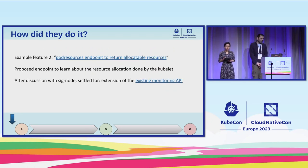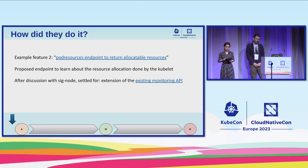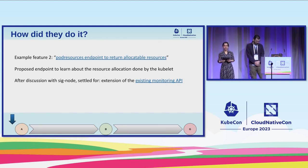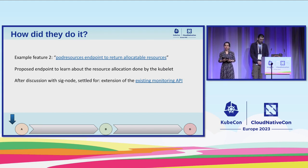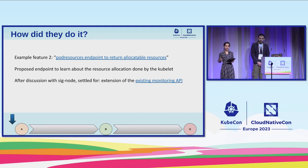Another proposal we had was related to the topology-aware scheduling use case we were working on. We wanted to determine a way to get allocatable resources from Kubelet. We thought we'd introduce a new endpoint to capture this information, but after discussion with the community, we realized there was already an existing endpoint that could be leveraged with some minor modifications.